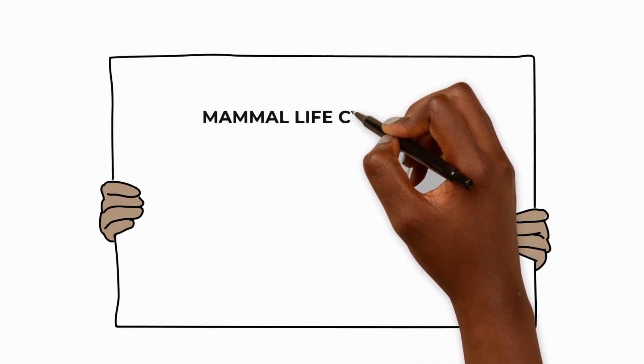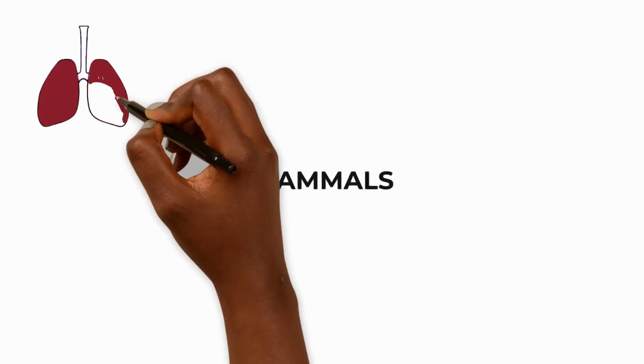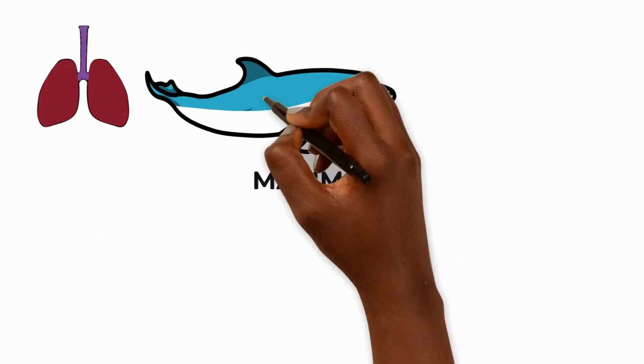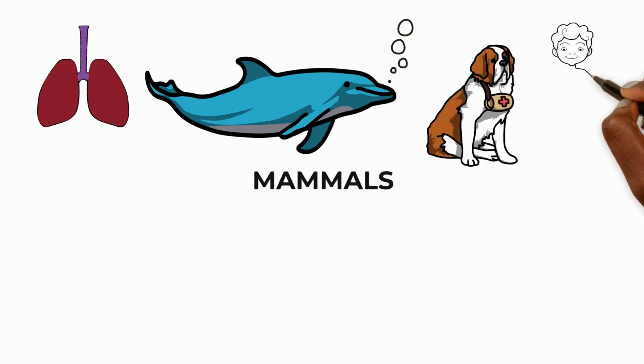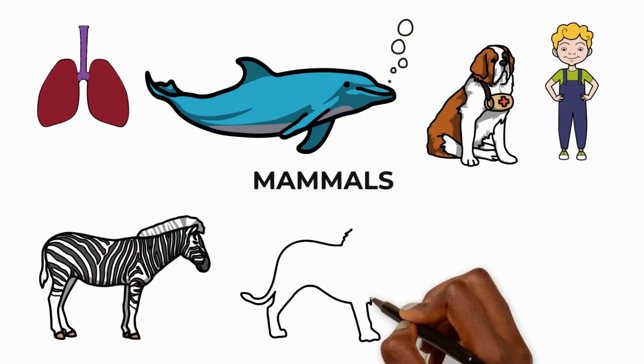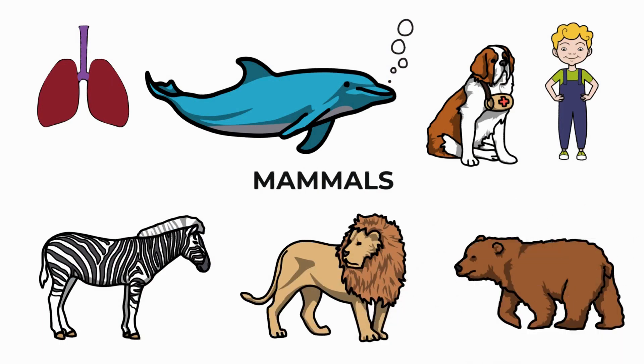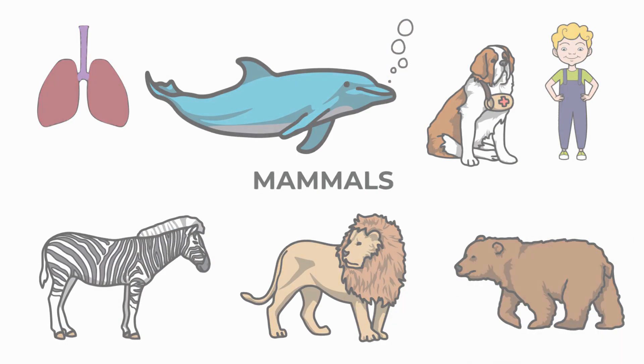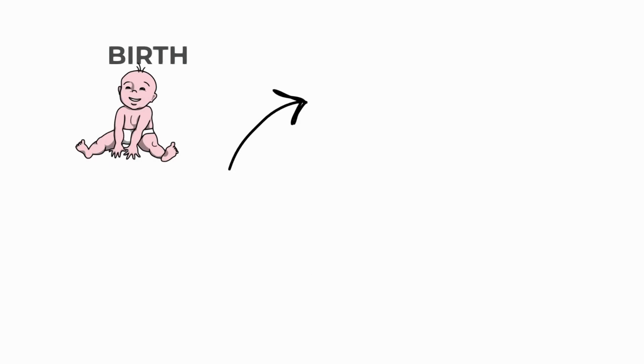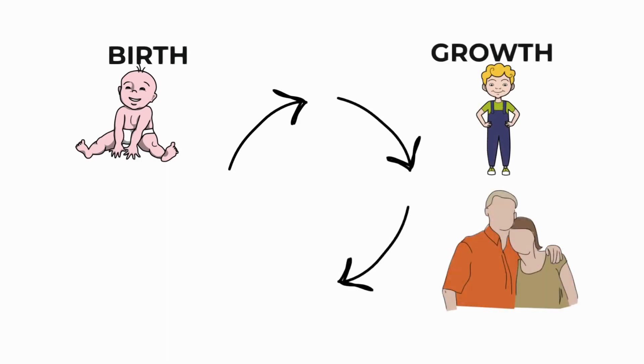Let's start with the mammalian life cycle. Mammals are animals that use their lungs for breathing air even underwater. They are vertebrates that are covered in hair or fur. The life cycle of a mammal follows the four stages of the life cycle of all living things: birth, growth, reproduction and death.